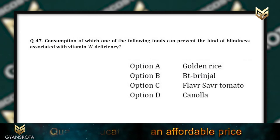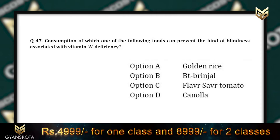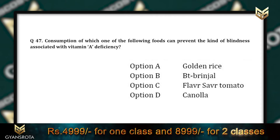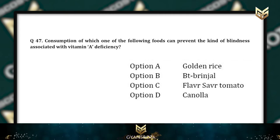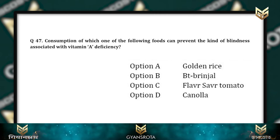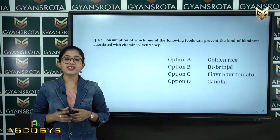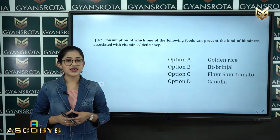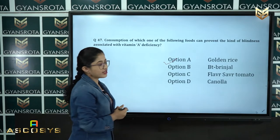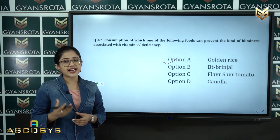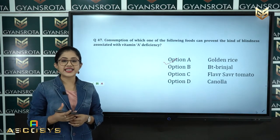Question 47: Consumption of which one of the following foods can prevent the kind of blindness associated with Vitamin A deficiency? Option A: Golden rice, option B: Bt brinjal, option C: Flavr Savr tomato, option D: Canola. This is from the unit Biotechnology. The correct answer is option A, Golden rice.